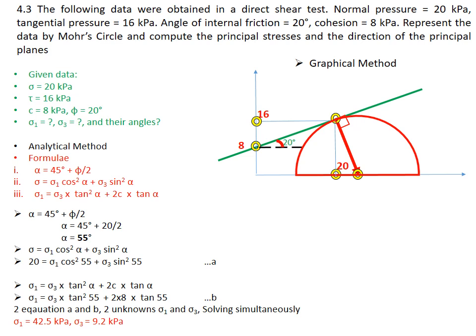So this is your Mohr circle. Now that semicircle touches the x-axis at two points. The first point is sigma 3, I hope you are getting the value around 9.2, and second point where it cuts is sigma 1 which is 42.5. So now you have the values sigma 1 and sigma 3. You can compare with the analytical; more or less it should be similar values.